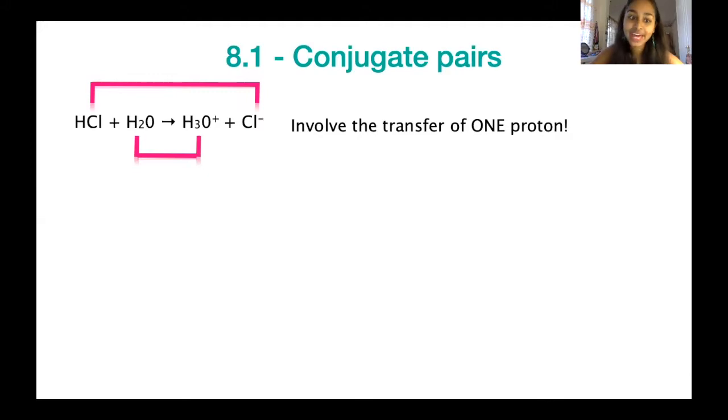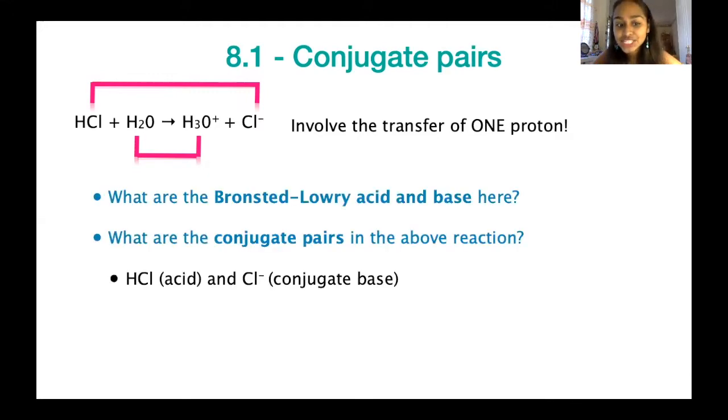We call that a conjugate pair. HCl is going to be your acid, and Cl- is going to be its conjugate base. Now, let's look at our base. H2O is going to be our base on the reactant side. It's accepted an additional hydrogen, or a proton, and it's become H3O+. Therefore, we can regard H2O as our base, and H3O+, as our conjugate acid. The best way to spot a conjugate pair is always to look at the transfer of the hydrogen or the proton.